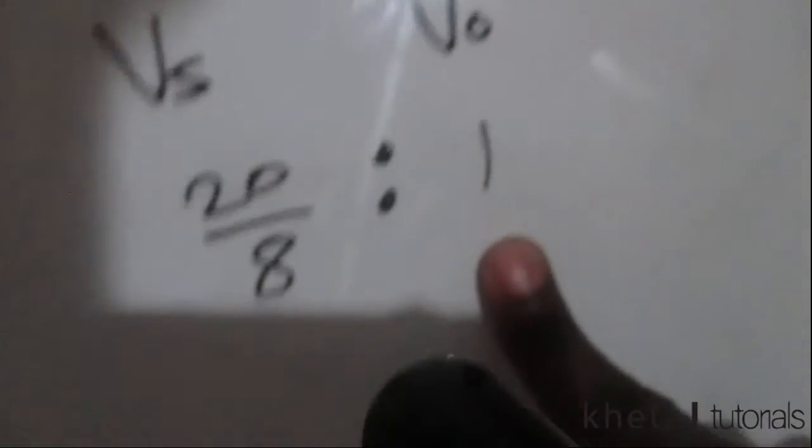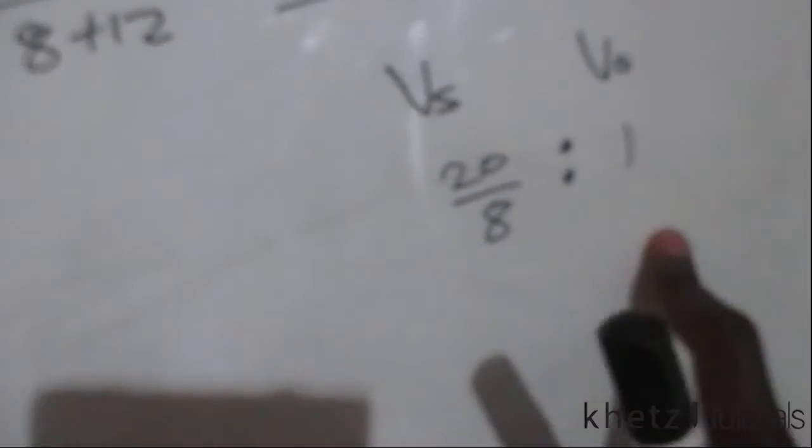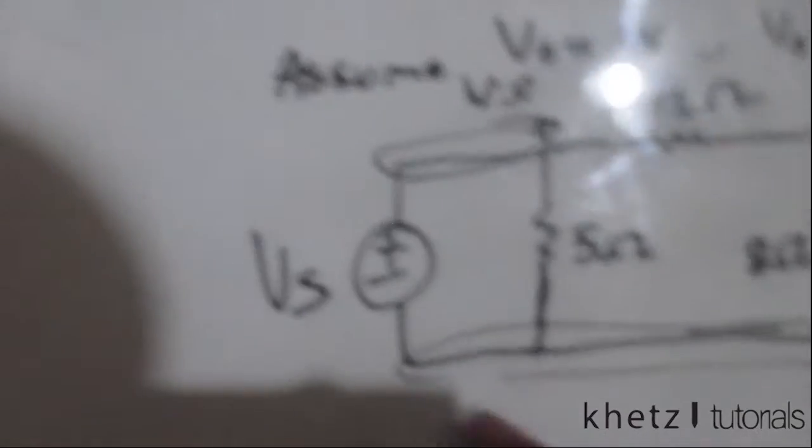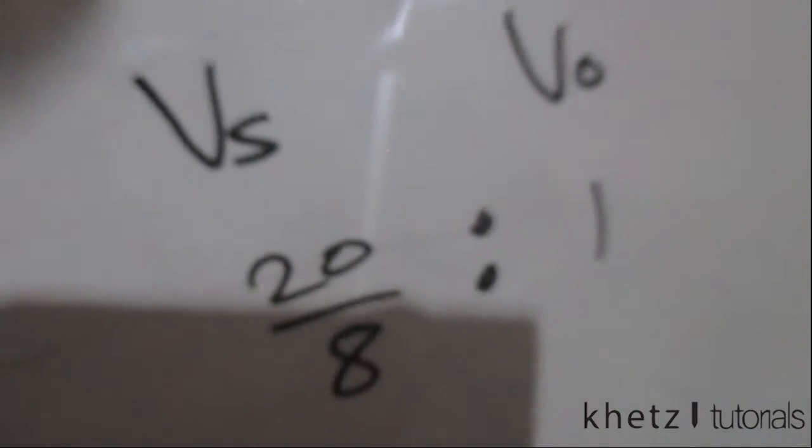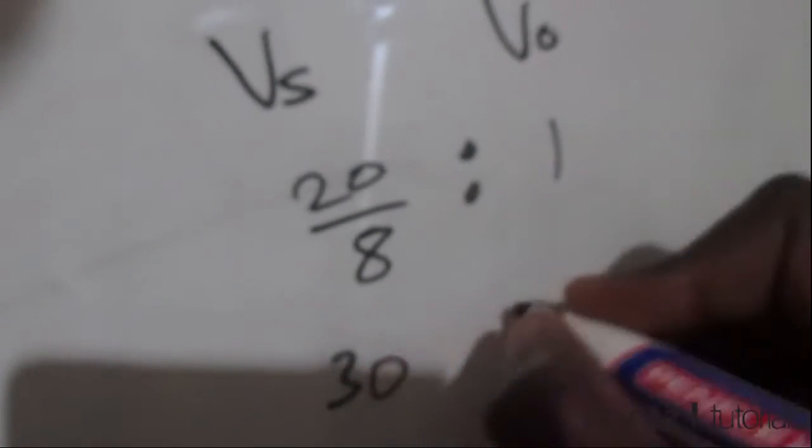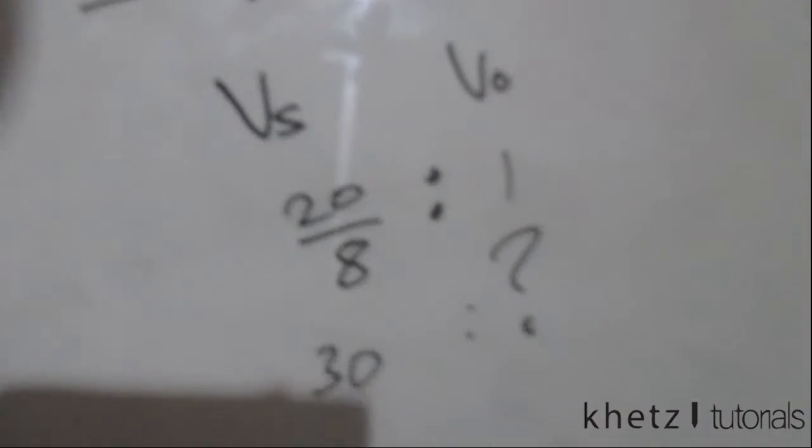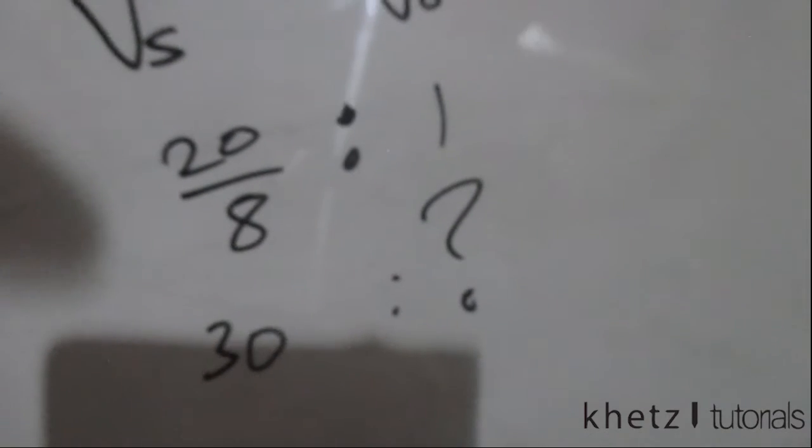Now we are given 30 volts as our vs, which was here in the question. So this is our vs column, or this is our input column of vs. If we have 30, then what is the value of our vo? That is what the question is asking for.